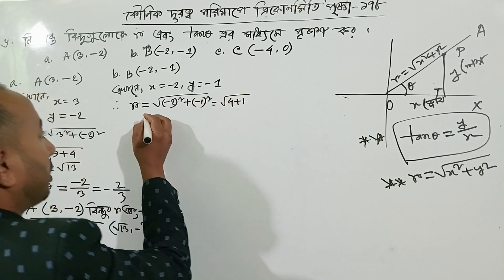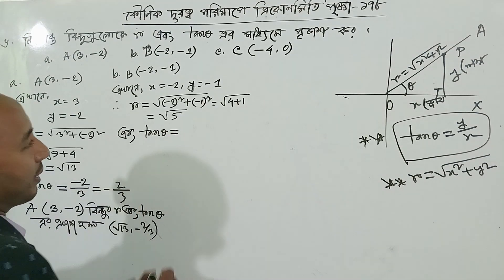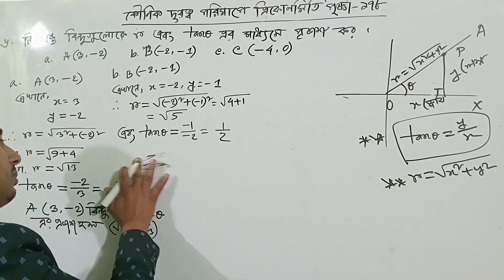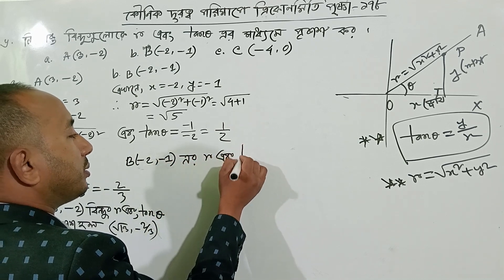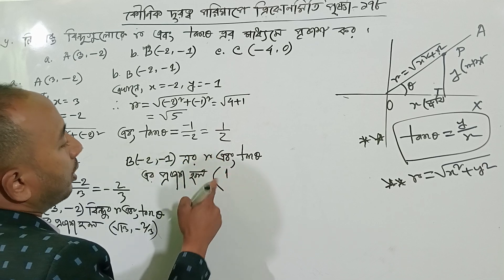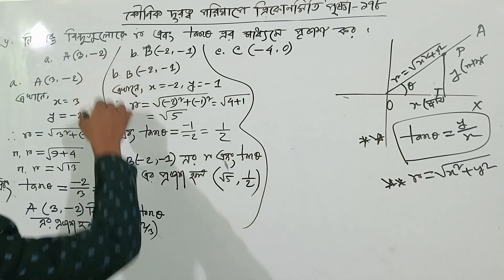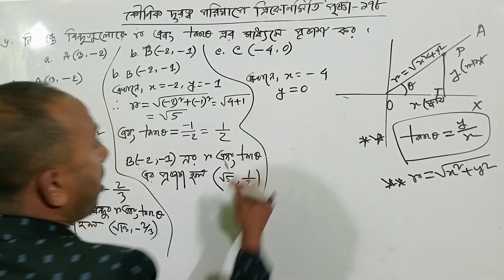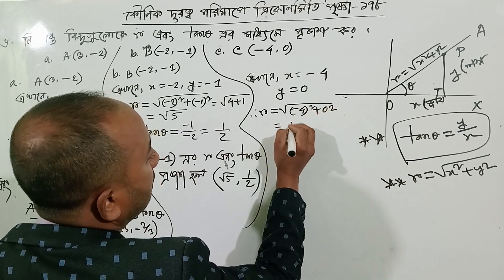બરુર થારટી આર આતેન્તેર છે, બરુર પ્લાસ વન છે, રૂટ 5 એ ટેન્તે ટાઇકે. y બા આર એ ટેન્તેતા, પ્રકાશ હ્લો, આરામાં પાકે. હાફ ડેશ સ્કેર સ્કેર, ગુટ માાસ ફોર, સ્કેર.